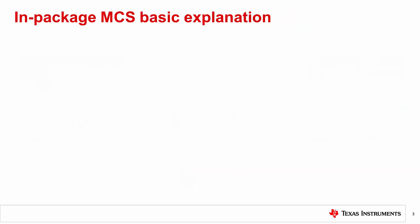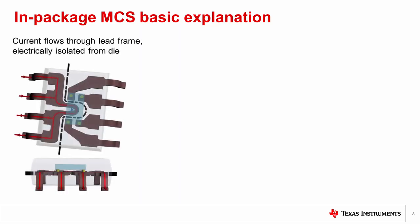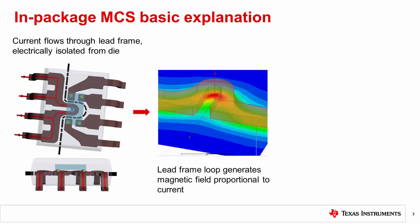Let's talk a little bit about in-package MCS and how it fundamentally works. In this type of solution, the current to be measured passes through the device package via a low-impedance lead frame, shown here on the left side of the package. The lead frame is the metal structure inside the package that carries signals between the die and the outside world. The flow of current through a specific lead frame geometry, shown here as a loop or U in the left side of the lead frame, generates a concentrated magnetic field.